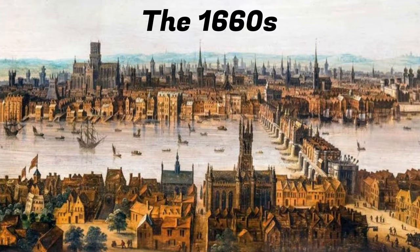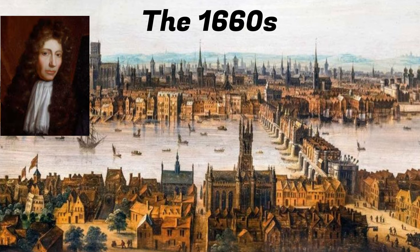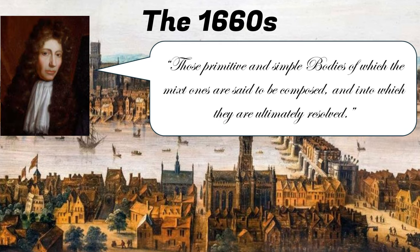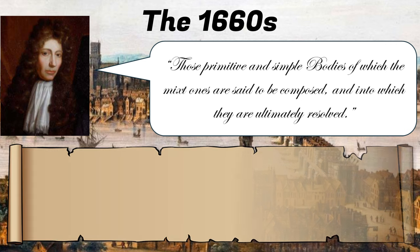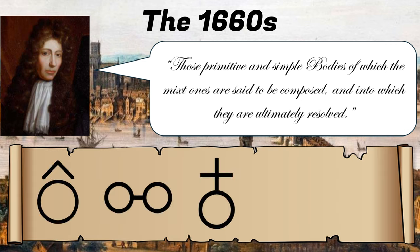Then, all the way in 1661, in the Age of Alchemy, Robert Boyle gave the definition for elements as those primitive and simple bodies of which the mixed ones are said to be composed and into which they are ultimately resolved. And during that time, the elements zinc, arsenic, antimony, bismuth and platinum were also discovered.